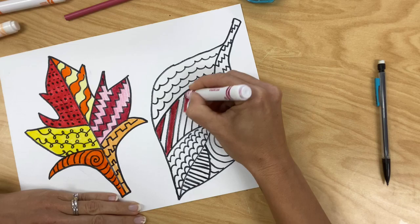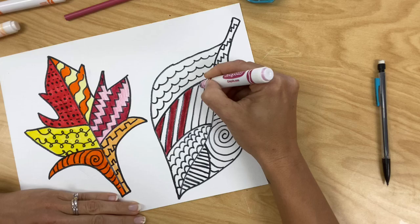Coloring neatly. Neatness is part of your grade. Make sure when you're coloring, you're coloring in one smooth direction, leaving no white space.